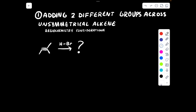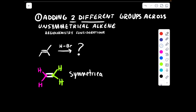Let's go over the first situation you are going to encounter with addition reactions: adding two different groups across an unsymmetrical alkene. So, what is an unsymmetrical alkene? An alkene is a double bond where there are two carbons that make up that double bond. Currently, the pink carbon is attached to two hydrogens and the green carbon is attached to two hydrogens. Since both the pink and green carbon have the exact same groups attached to them, this is considered a symmetrical alkene. As soon as I replace one of these hydrogen groups with a group that is not hydrogen, we get an unsymmetrical alkene.